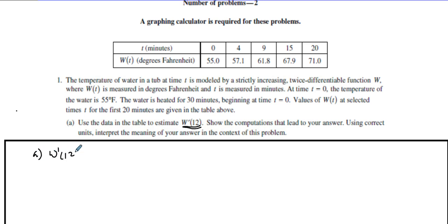What we're looking for is W prime, which means we're finding a rate. So in part A, W'(12) means we're finding the rate at 12. To approximate what 12 would be, we're going to take the two closest points to that and find a slope, because this is finding the slope.